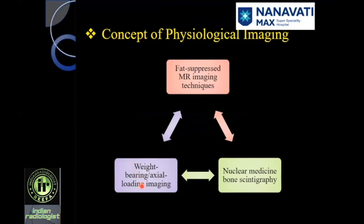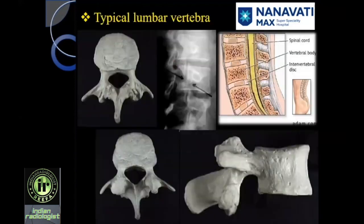Last decade, there was a lot of emphasis on weight-bearing or axial loading imaging, where there was axial pressure on the vertebrae and disc to look for small disc herniations which would show up only with load-bearing, typically seen when the patient is standing. This is now going out of fashion. Some people also use nuclear bone scintigraphy to look for edema, or when you have multiple multilevel disc disorders and you are looking for which disc is responsible for the pain, nuclear scintigraphy is quite useful.